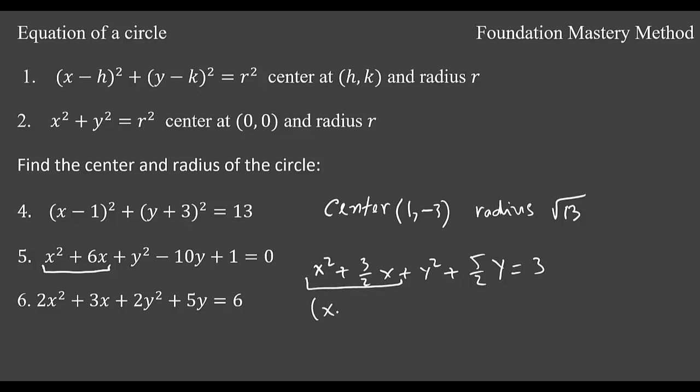You write here x plus take half of it or multiply this term by half. So we get 3/4 and then square plus y plus half of it. That will give you 5/4 and then square it. Keep your 3.